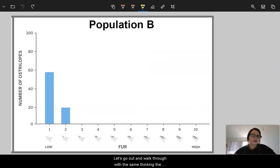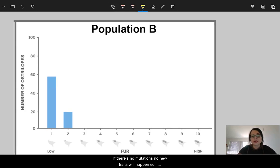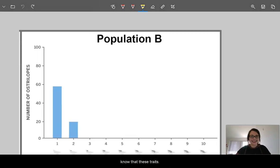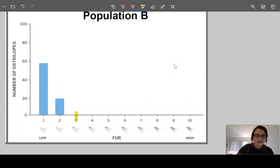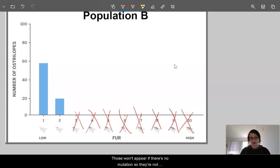So let's go ahead and walk through with the same thinking. The environment's becoming cold and this population can't mutate. If there's no mutations, no new traits will happen. So I know that the traits that are going between right here with 3, 4, 5, 6, 7, 8, 9, 10, those won't appear if there's no mutation, so they're not even a possibility.